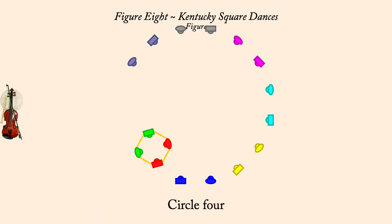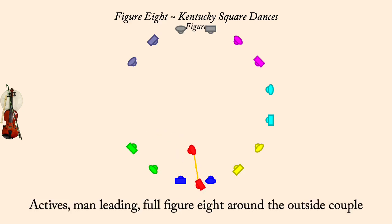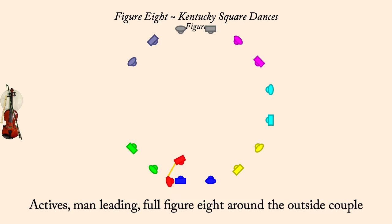Circle left four. On to the right, full figure eight around the outside couple. Circle left four.